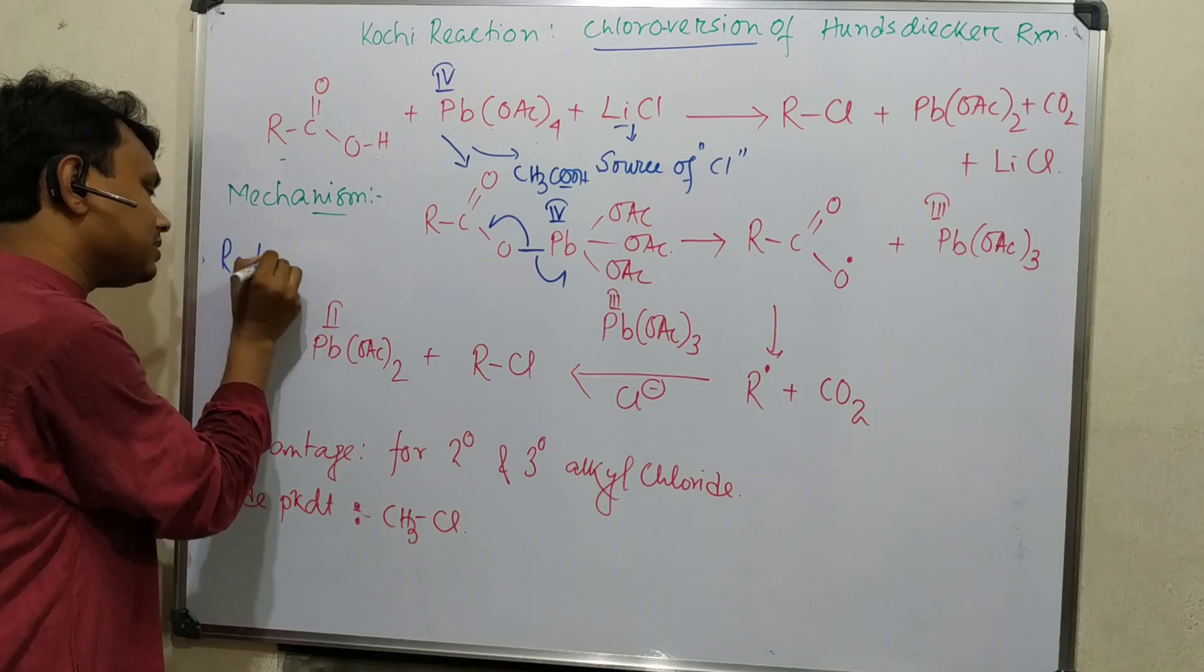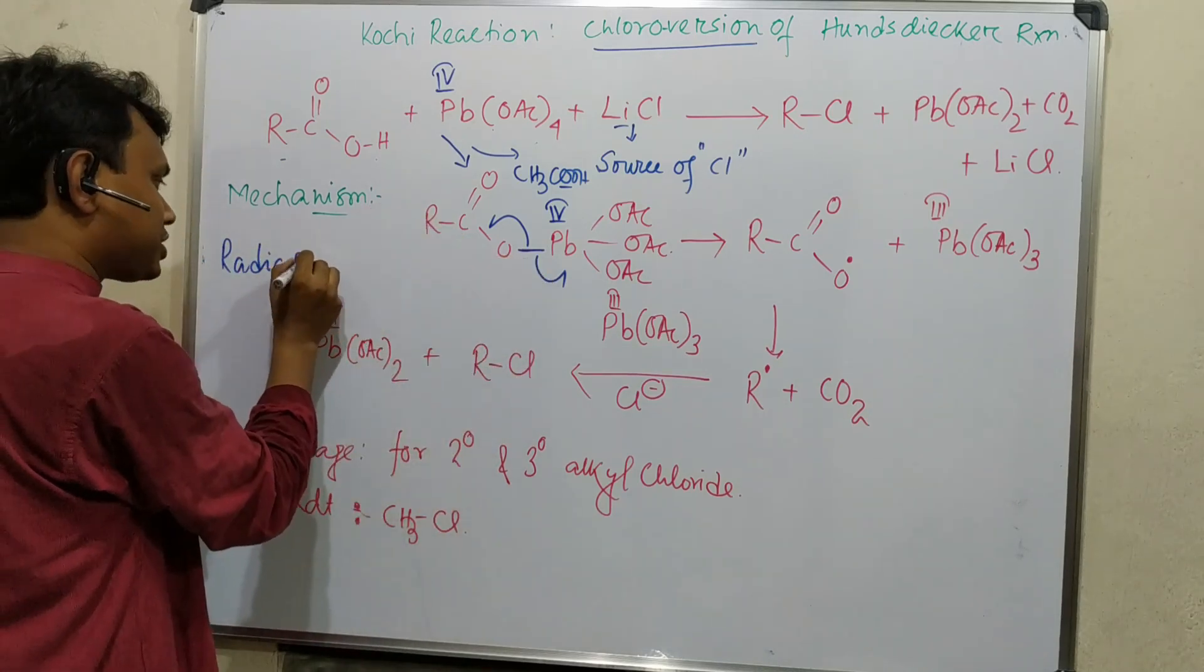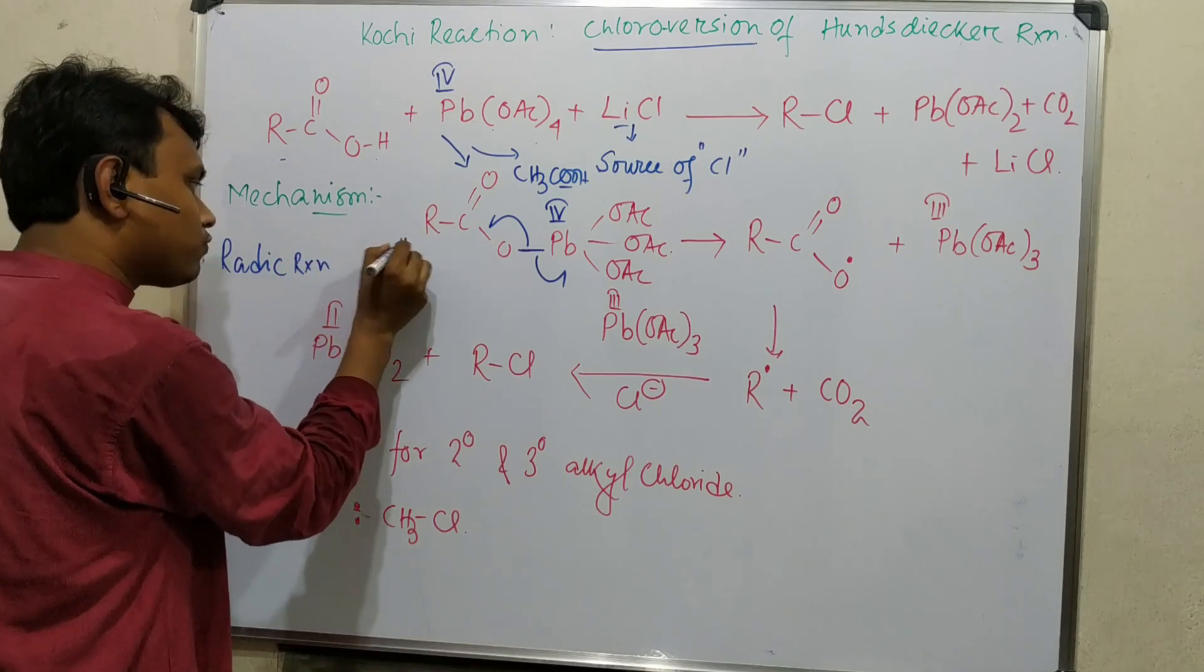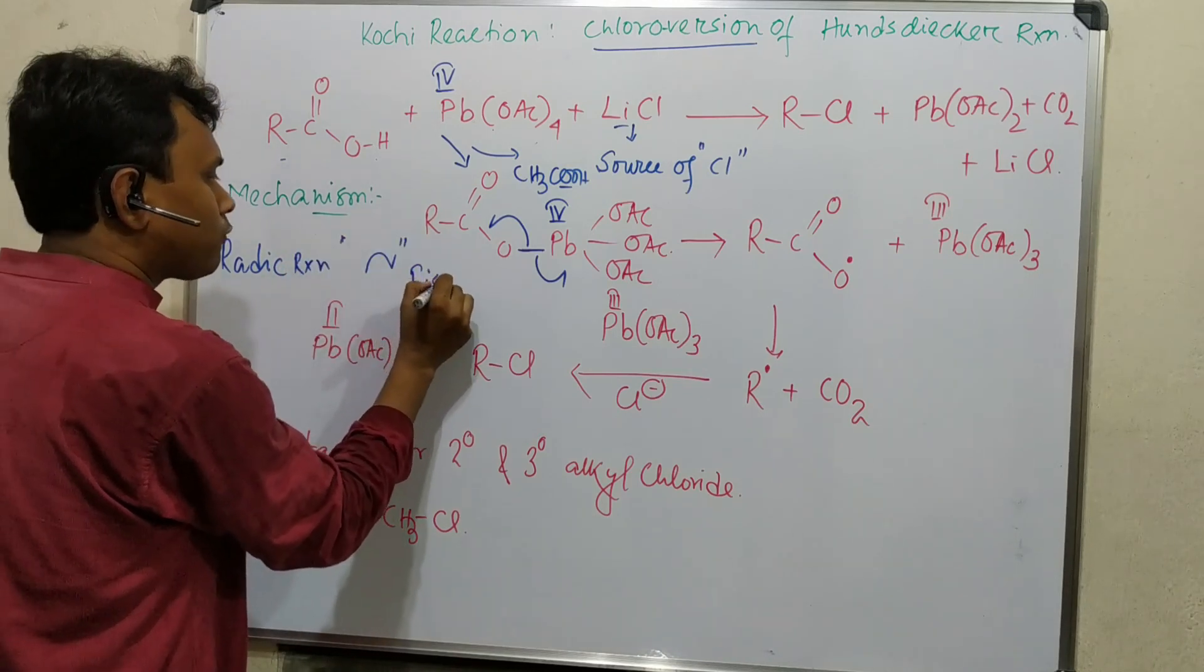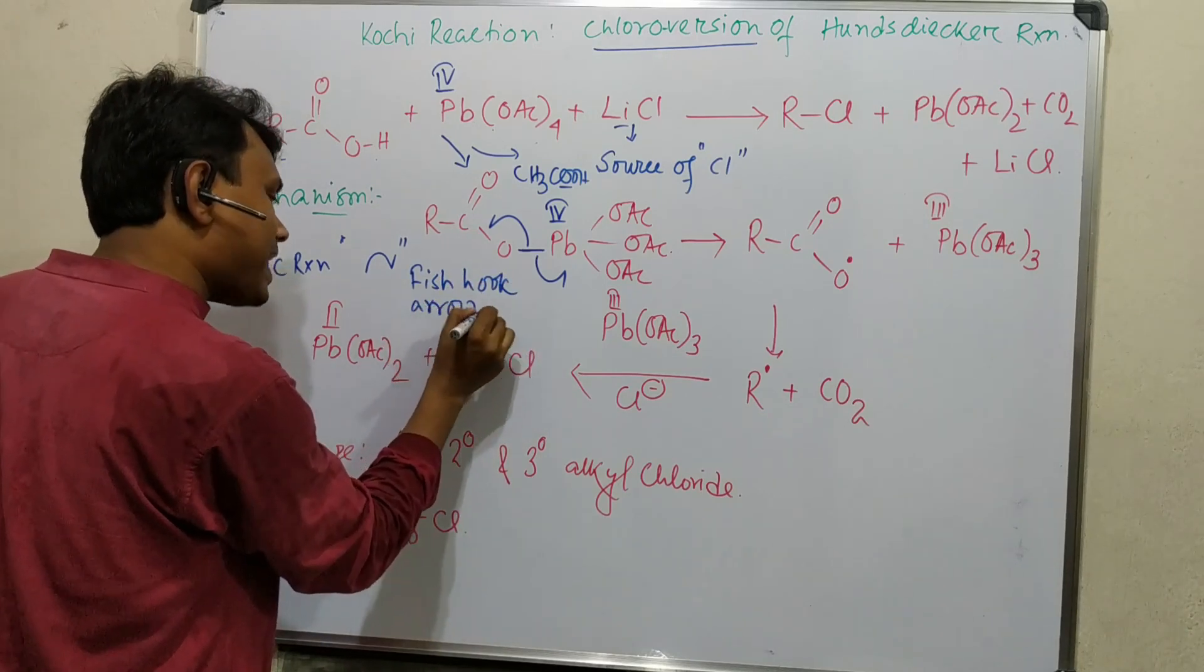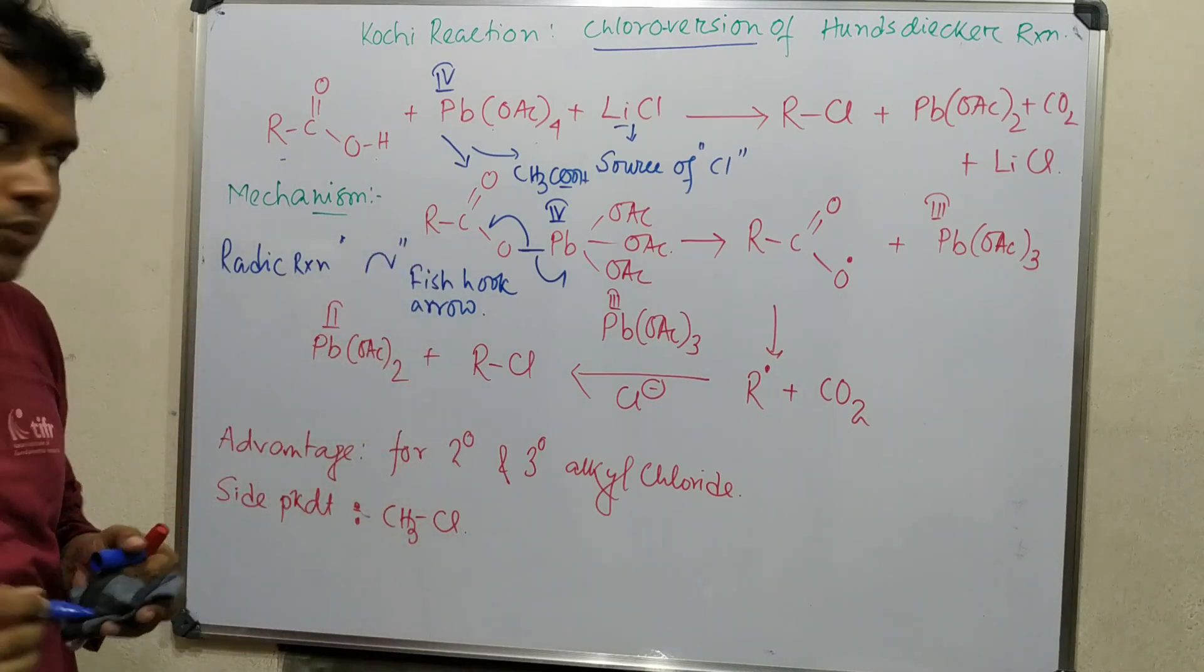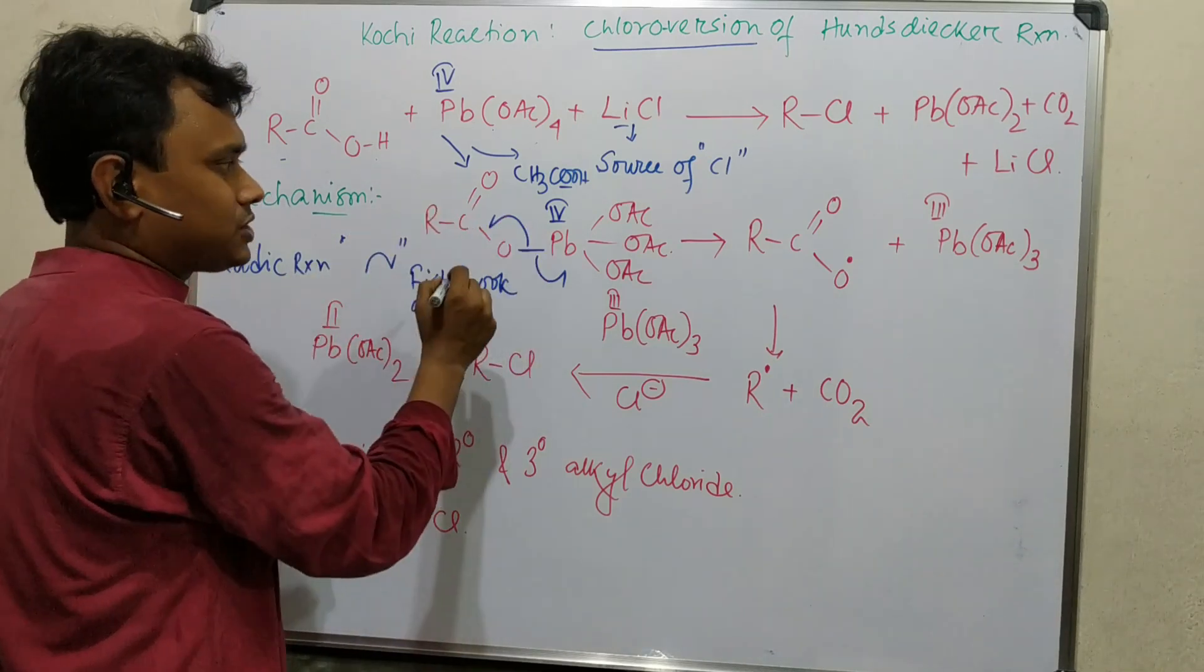Fish hook arrow is important for radical reactions. For homolytic cleavage, radical reactions, this fish hook arrow is used. Fish hook is used to catch fishes, and the arrow looks like that. That's why this is called fish hook arrow. This represents homolytic cleavage.